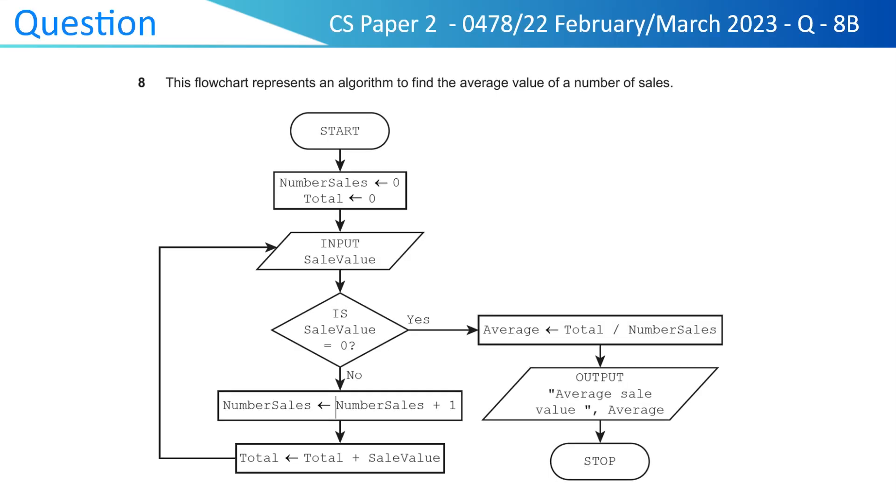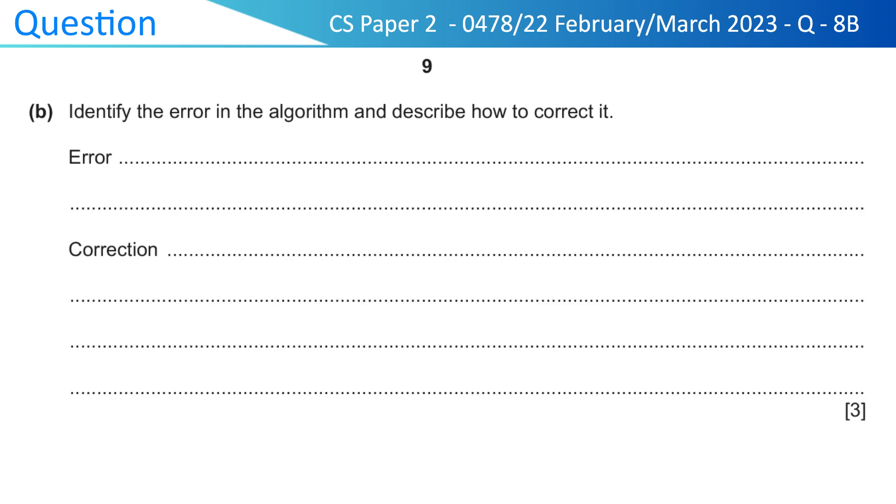The question is, this flowchart represents an algorithm to find the average value of a number of sales. Identify the error in the algorithm and describe how to correct it.